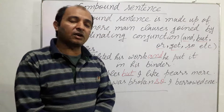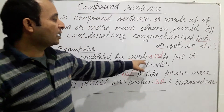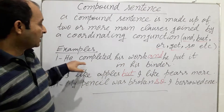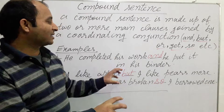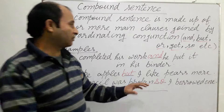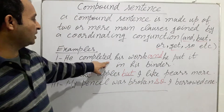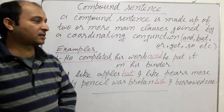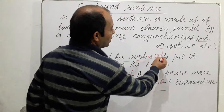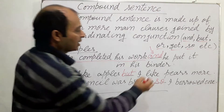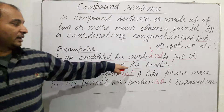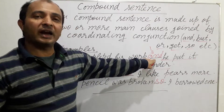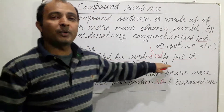Let us take an example: 'He completed his work and he put it in his binder.' This is a compound sentence with two clauses. 'He completed his work' is a main clause because it conveys full meaning. 'He put it in his binder' is also a main clause. These two main clauses are joined with the coordinating conjunction 'and', so as a whole this is called a compound sentence.